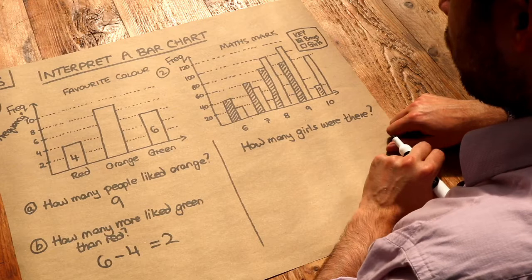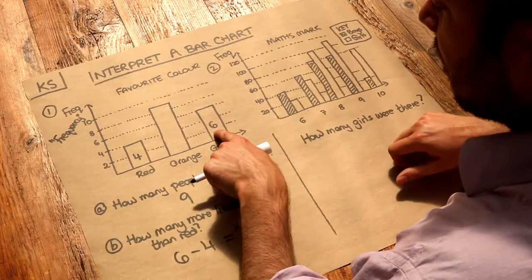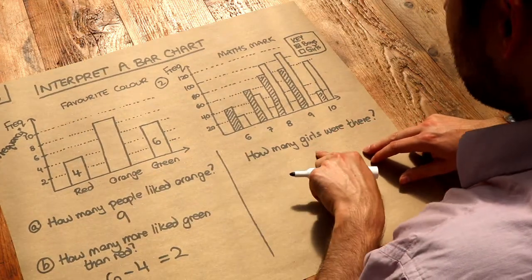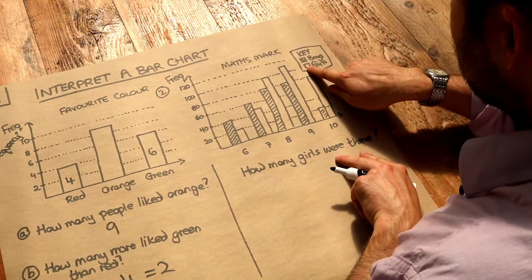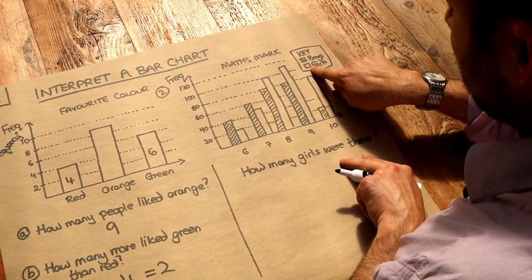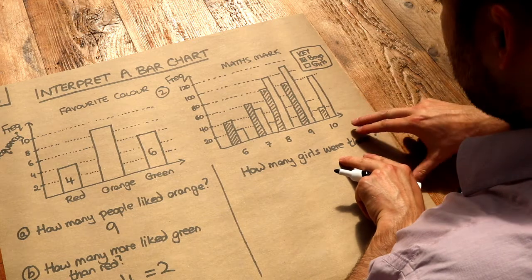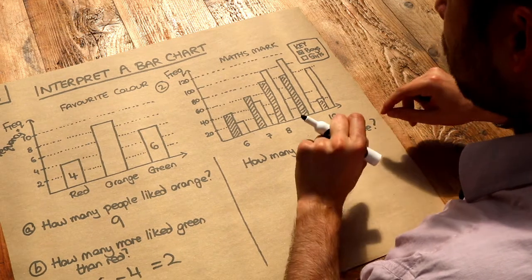The question is asking how many girls were there. Again, we can use this strategy on the left where we can write the numbers on the bars. So we're looking at the unshaded bars because that's the girls, and we want the total number of girls, the total frequency.